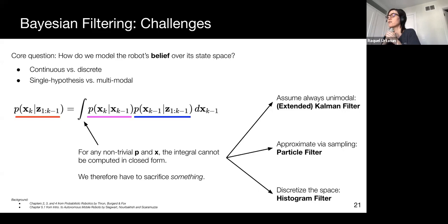However, the modes of the distribution can still collapse as the number of particles necessary to model the distribution grows as an exponential function of the number of dimensions of your state space, which can be quite large.